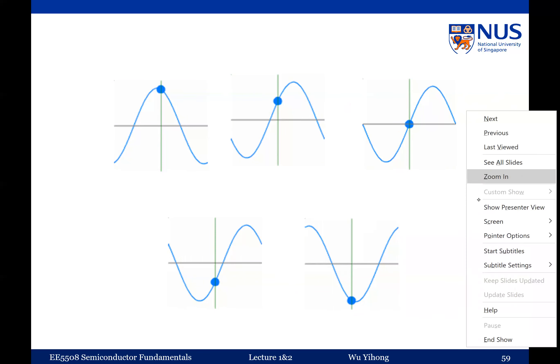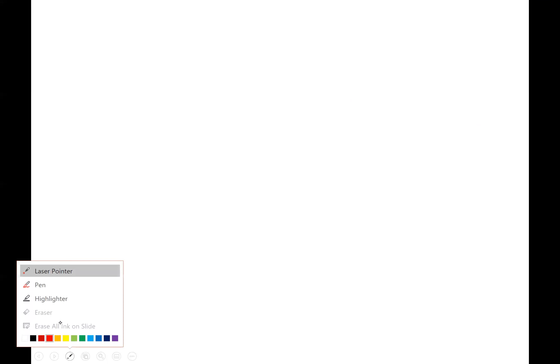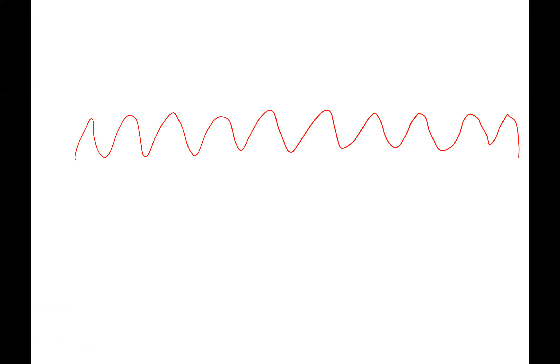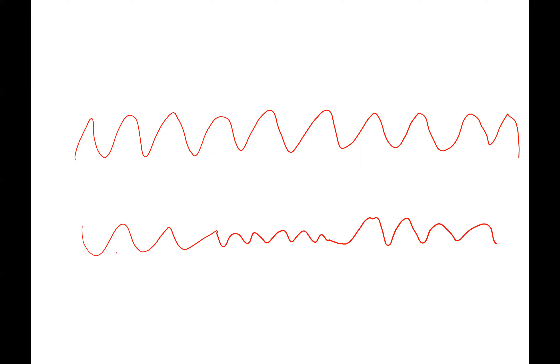A simple plane wave is not very interesting because it has constant amplitude and does not carry any information or energy. If you take the average of the energy, it is just a constant — there is no change. What is more interesting is a wave with different frequencies in different ranges, or with a different amplitude — because this carries information depending on the type of modulation in frequency, amplitude, or phase.